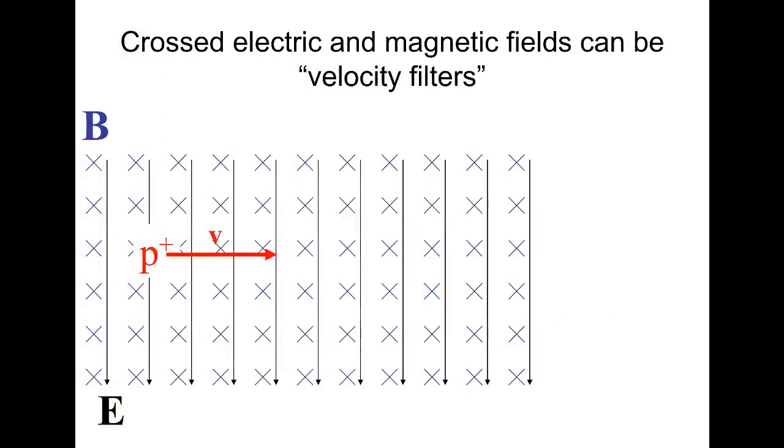Okay, now one application of this is what we call a velocity filter. And this is when you have electric and magnetic fields that are crossed, or they're in the same place at the same time. So imagine that you have a positive charge with a velocity of v, and you have an electric field pointing down and a magnetic field pointing into the page. So what would be the magnetic and electric forces on this positive charge?